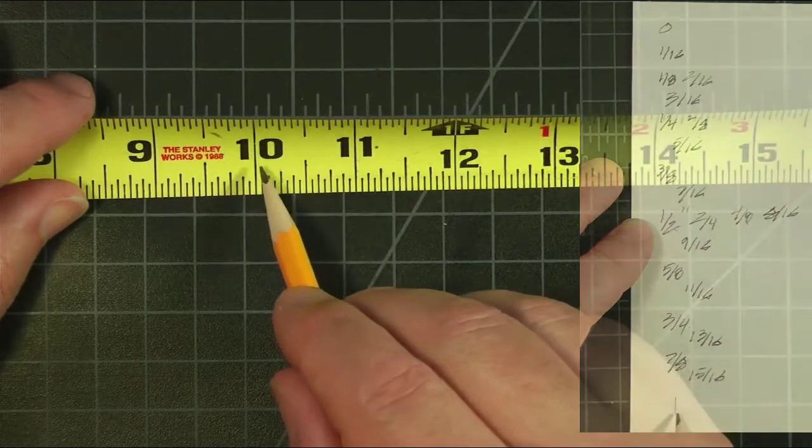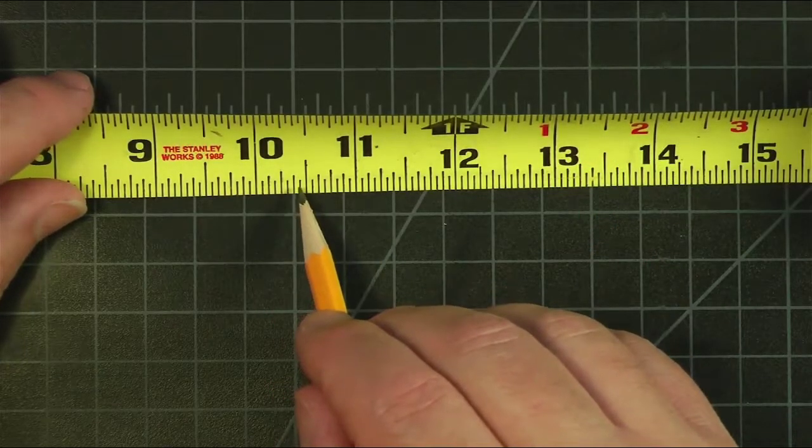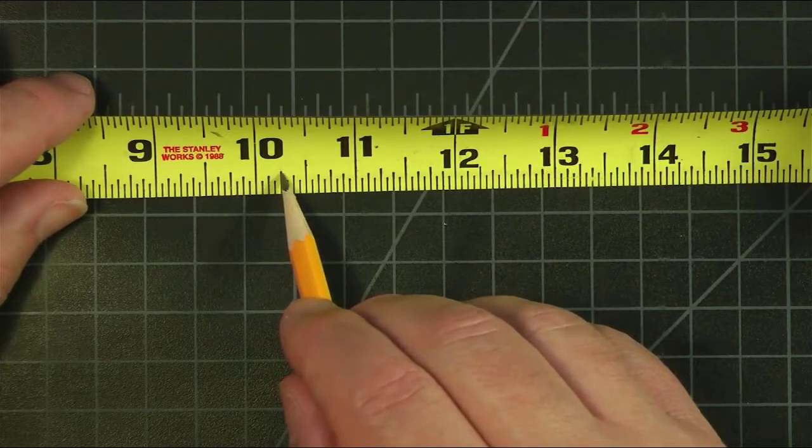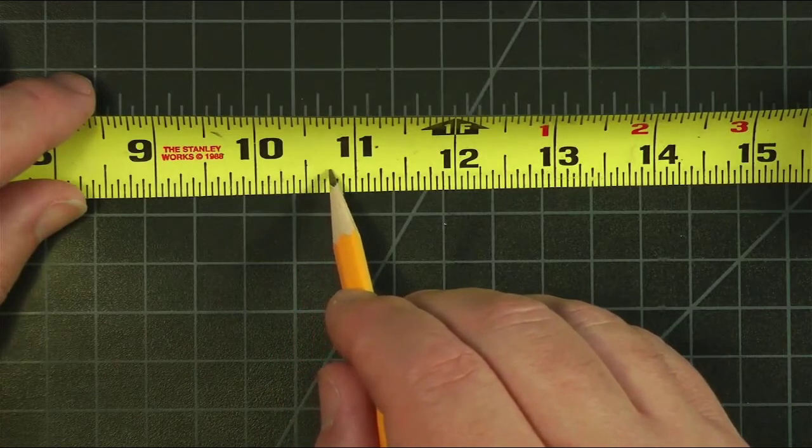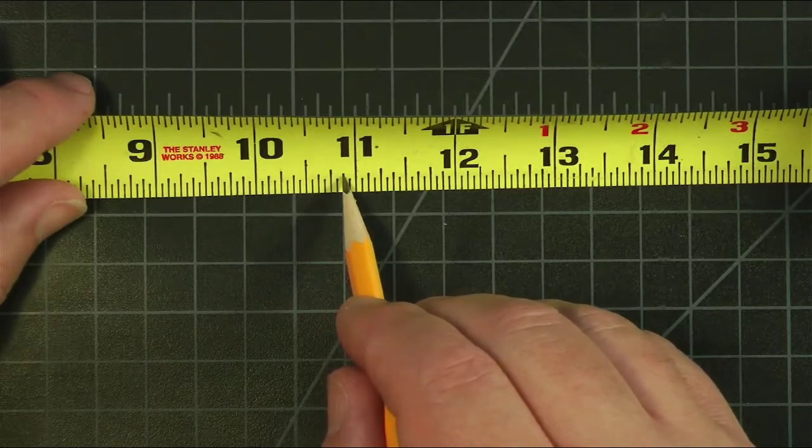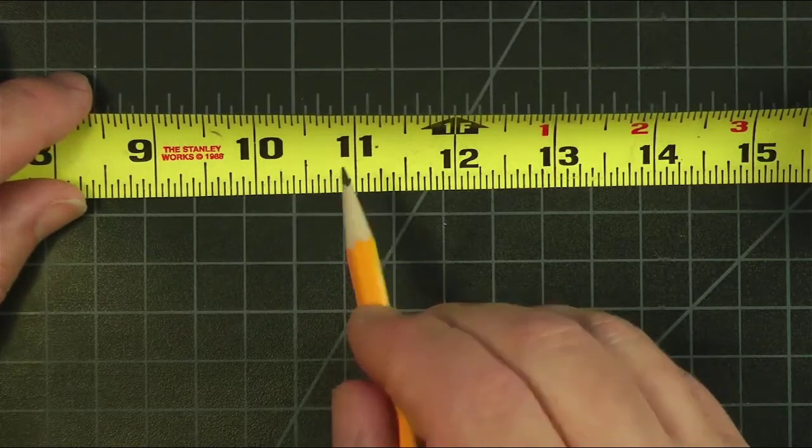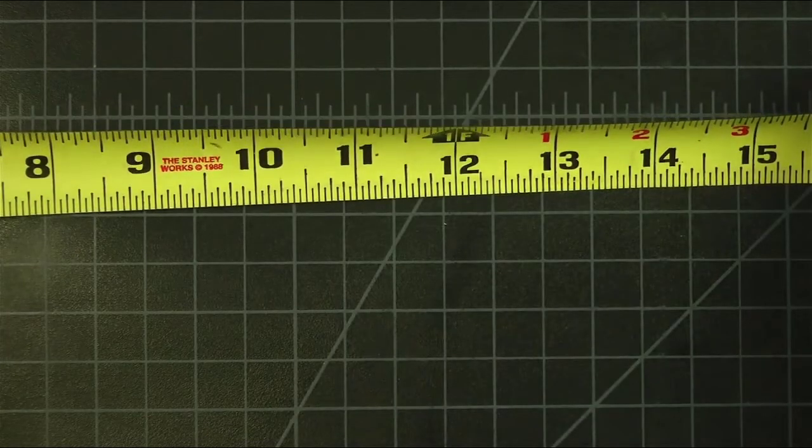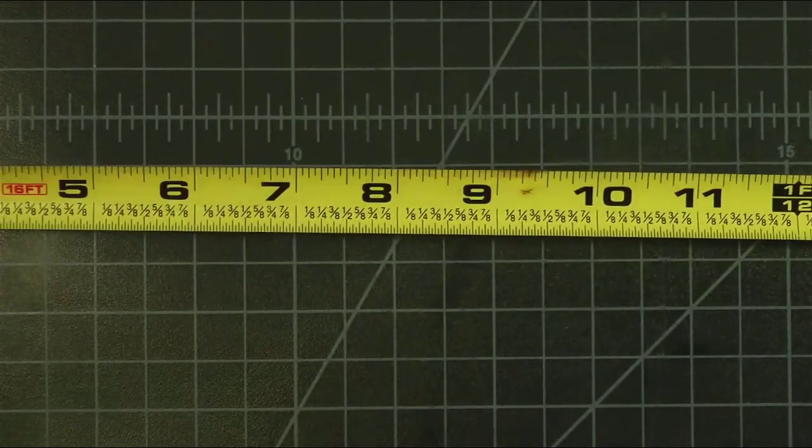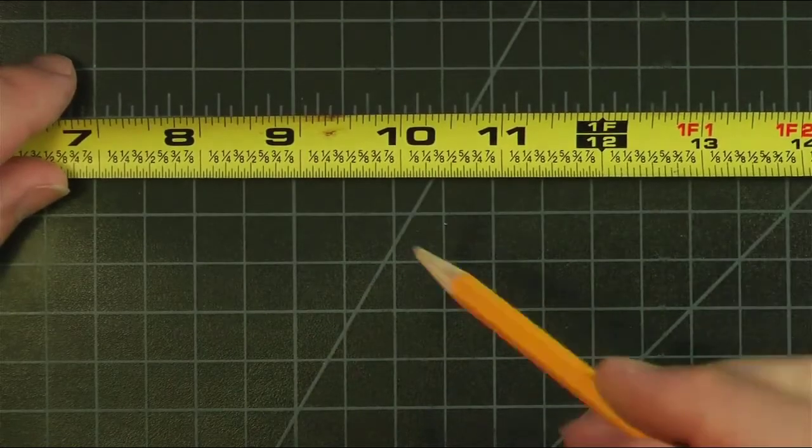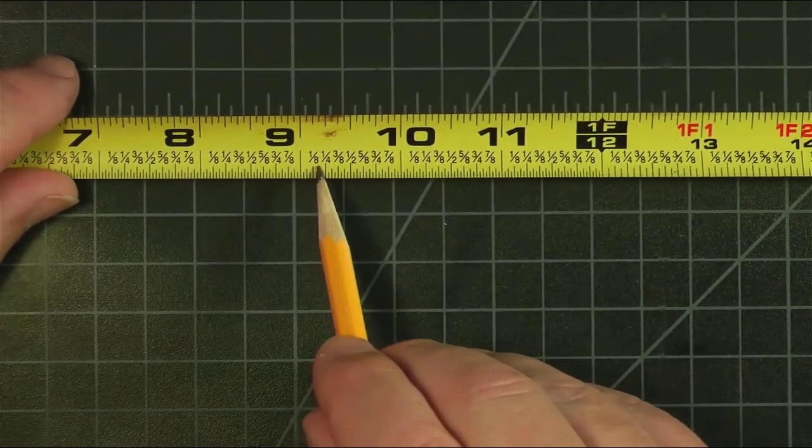Again, we have all of these little lines: an eighth, a quarter, three quarters, a half, and we're going to use another tape measure to get even more detailed, one which has the eighths on it. So in here we see the 1/8 inch mark.